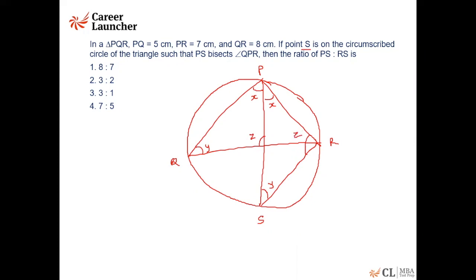We have been given this is 5 centimeters, this is 7 centimeters, and QR is given as 8 centimeters. So we know that since PS happens to be the angular bisector of angle P, QT by TR must also be equal to 5 by 7, which is equal to PQ by PR.